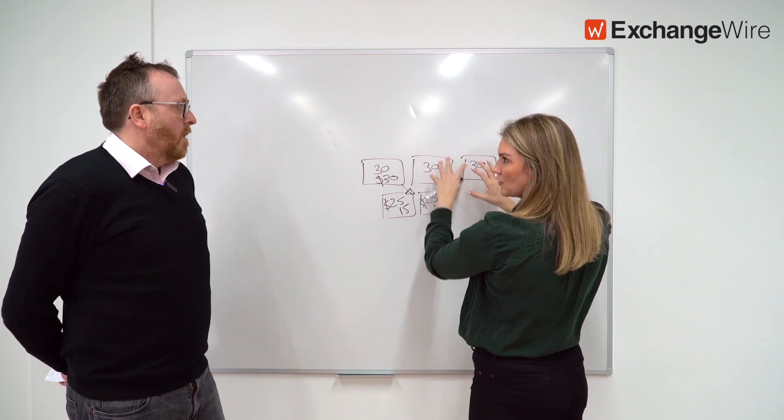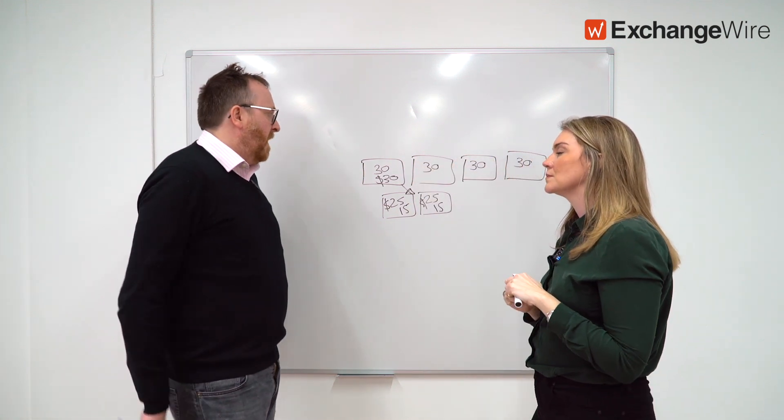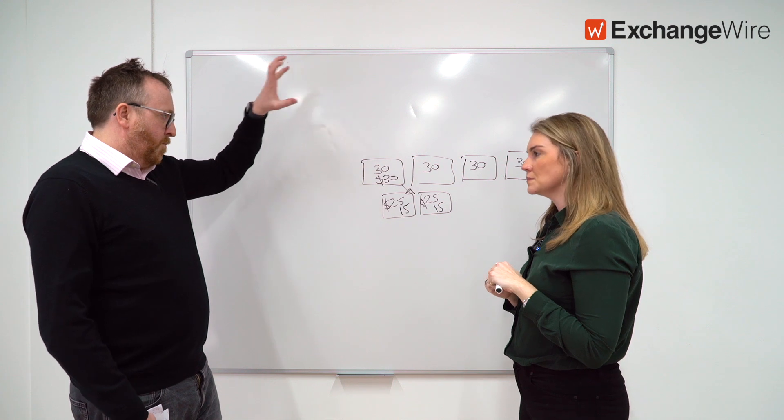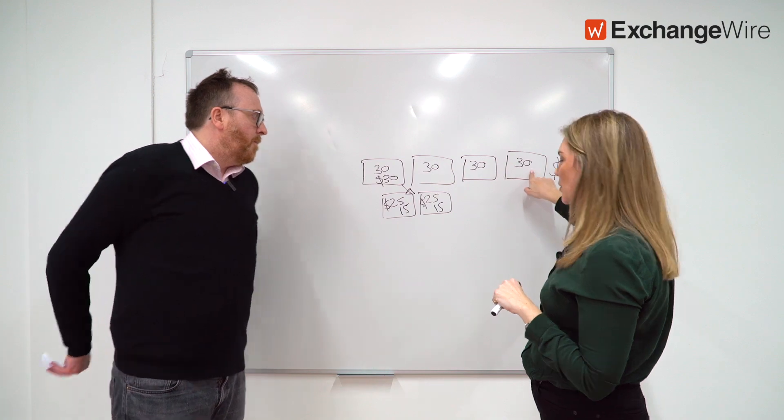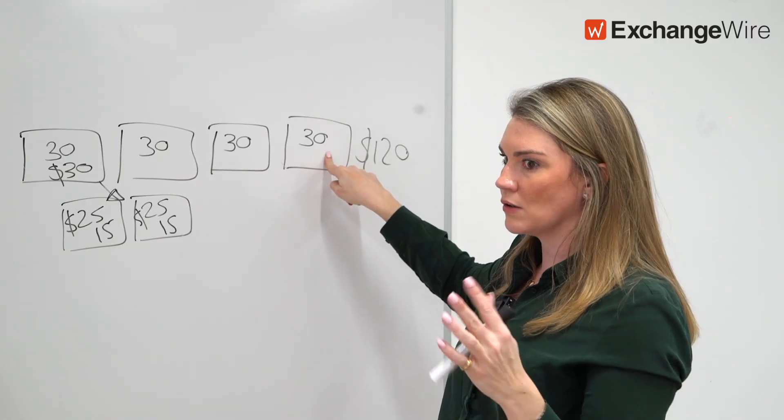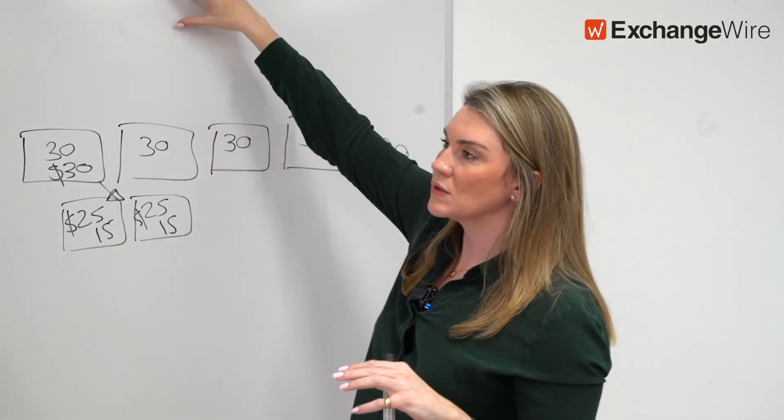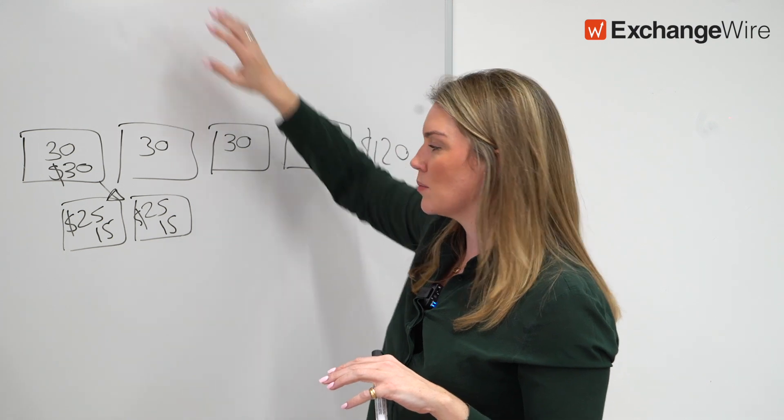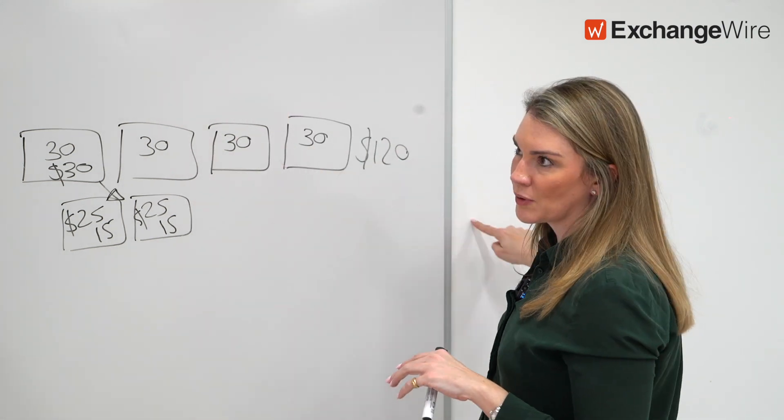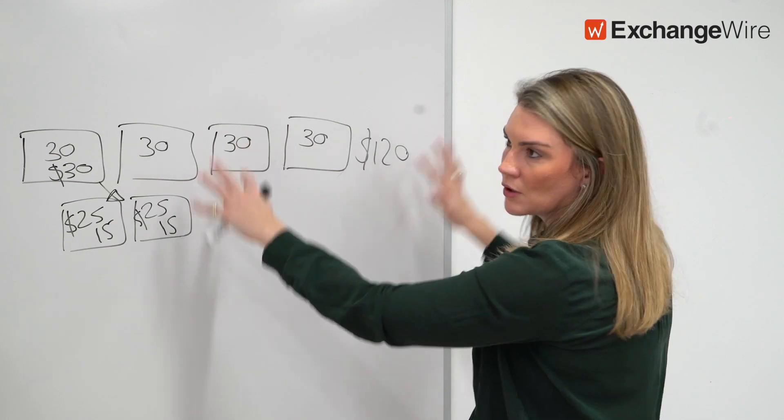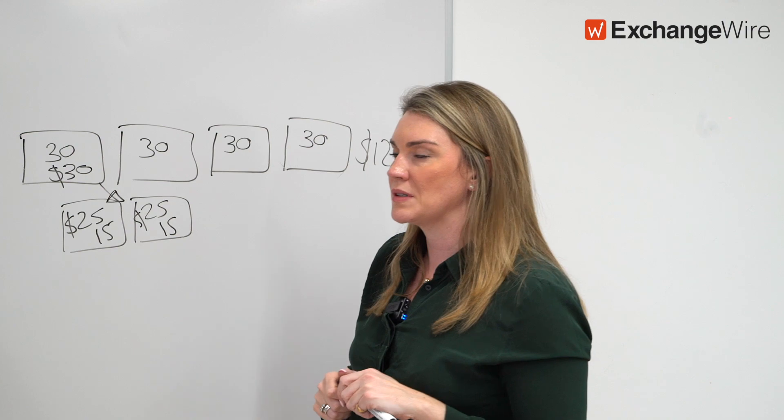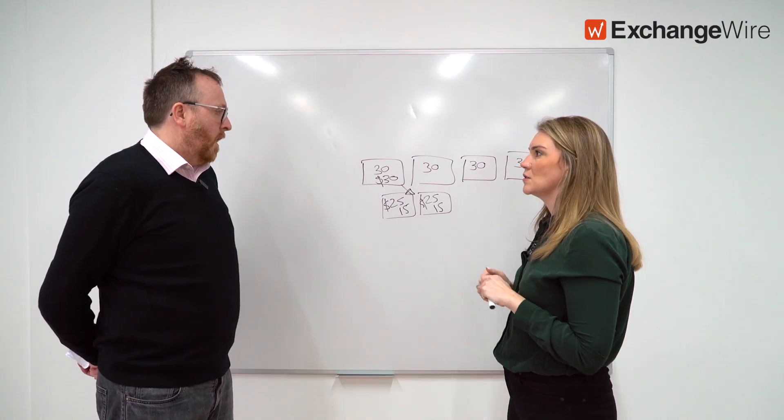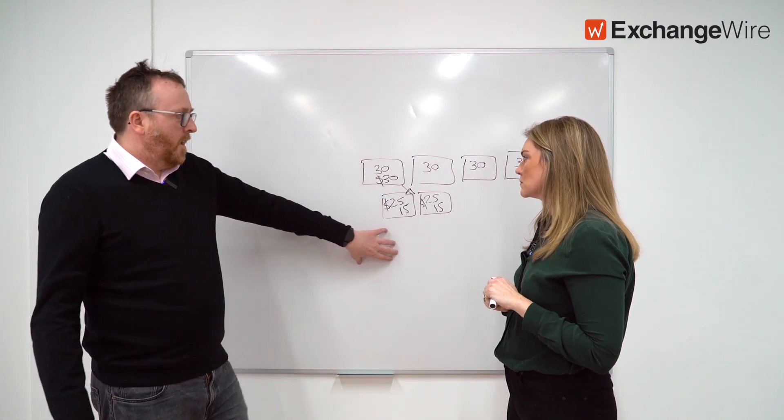So you can mix up where your priorities within the ad server. You can have your direct so it could be that your first ad break within content all sit in a PG deal for example, and then you've got your ad breaks throughout the content that are all auctioned, and then your final one at the end when somebody wants to see what happens next week. Can you see this becoming standard in the CTV world?